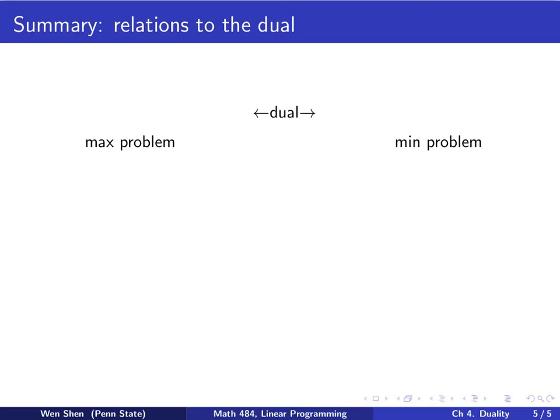All right, so probably it is a good time to make a big summary and list the relations of the dual problems. How are they relating to each other? We have found many of these, so let's list them. Here I have two problems that are dual of each other. If one of them is a max problem, then the dual is the min problem. That's the first connection.